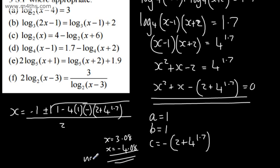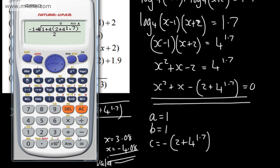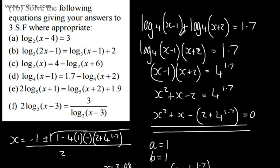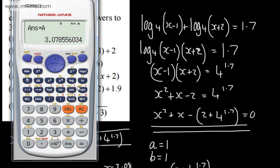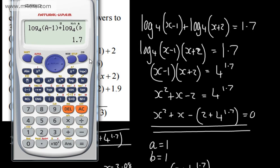x equals negative 4.08 is not valid — it's a negative number, and substituting it in, both terms would clearly be negative. So the answer is x equals 3.08 to 3 significant figures. Checking by substituting back into log to the base 4 of (x minus 1) plus log to the base 4 of (x plus 2) confirms we get 1.7.